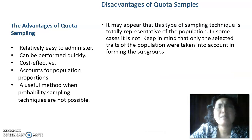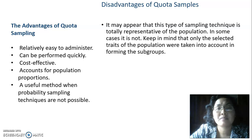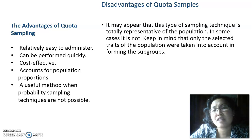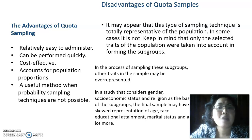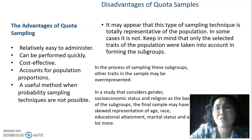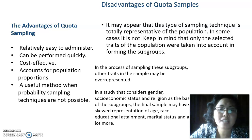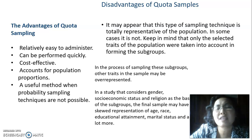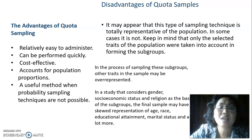The disadvantages of quota sampling: it may appear that this technique is totally representative of the population, but in some cases it is not. Only the selected traits of the population are taken into account in forming subgroups. In the process of sampling these subgroups, other traits may be over-represented. For example, a study that considers gender, socioeconomic status, and religion as the basis of subgroups may produce skewed representation of age, race, educational attainment, marital status, and more.